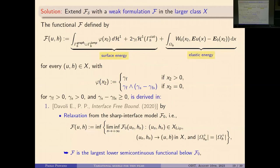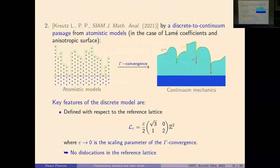Both approaches yield the same functional F. There is also a third derivation starting from discrete atomistic models: we take a triangular reference lattice L_epsilon with lattice spacing epsilon and perform gamma-convergence as epsilon goes to zero, rescaling the energy. Here we consider a regular homogeneous lattice without dislocations between film and substrate.